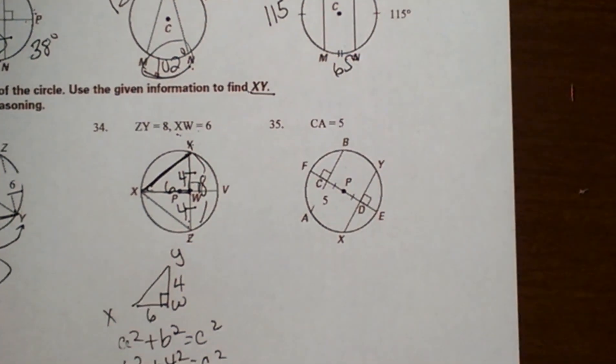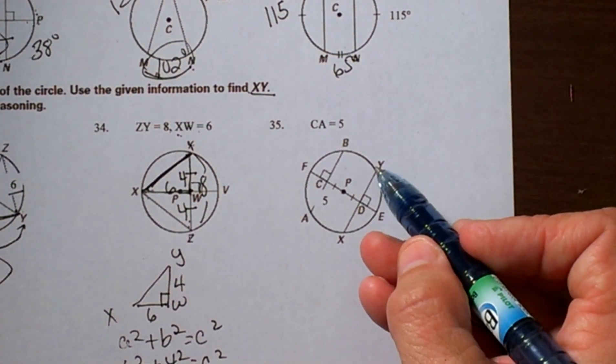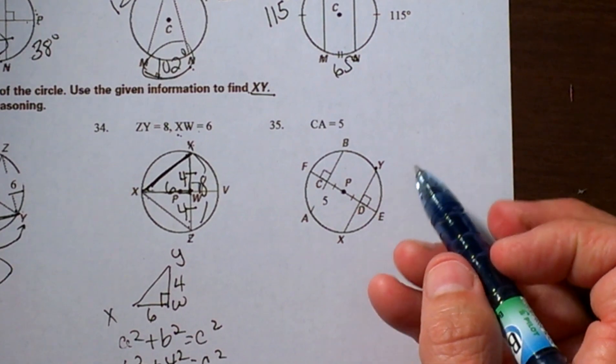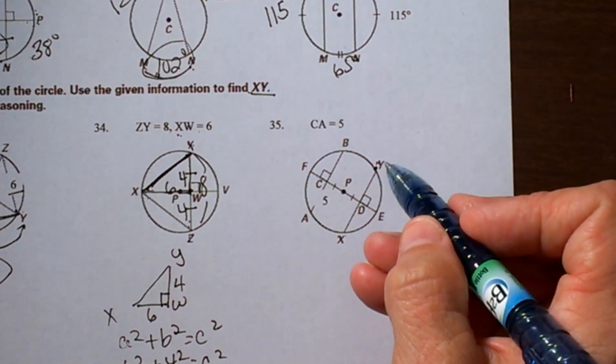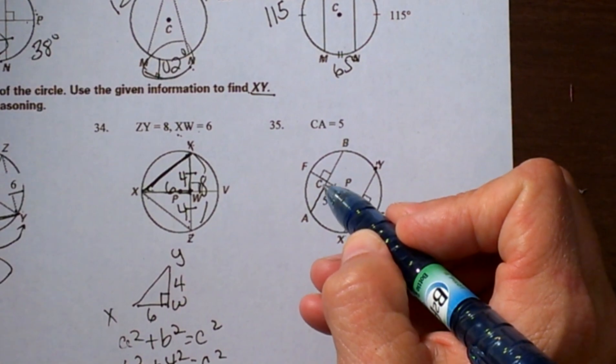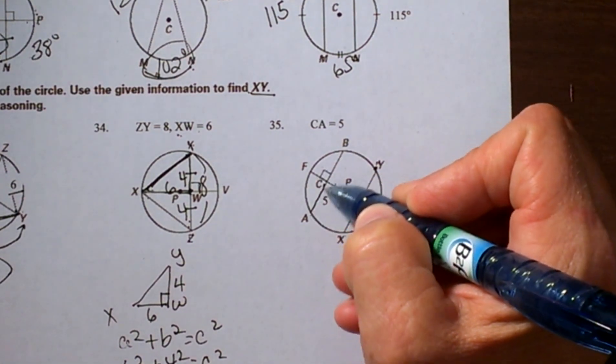One more on this page. They are getting a little harder, so hang in there. XY is what we are looking for, so we are looking for the length of this chord. We can see that AC is 5. Well, if we know that we have a perpendicular angle here and AC is 5, that means CB must also be 5, so AB adds up to 10.